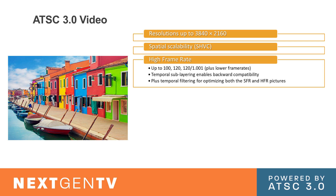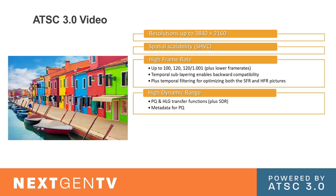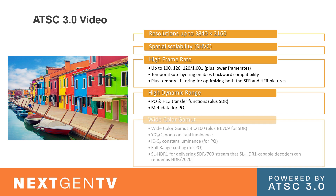High frame rate — up to 100, 120 frames per second, including temporal sublayering for backward compatibility, and a feature called temporal filtering which helps make sure that the standard frame rate version looks really good as well as the high frame rate version. High dynamic range — in my personal opinion one of the most important things in this standard. We have PQ and HLG, and there's a variety of metadata schemes available if you use PQ. Wide color gamut goes hand-in-hand with high dynamic range. Content with high dynamic range and wide color gamut will blow your doors off.